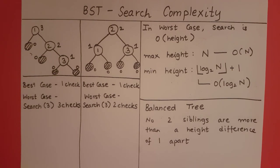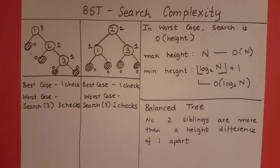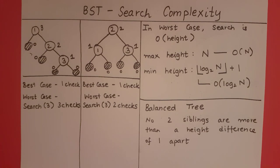Since the second tree is balanced, it gives us a search in O(log n) time. The key takeaway is that when creating a binary search tree, we should always try to create it as a balanced tree. To always ensure the tree remains balanced regardless of input, we can use an AVL tree. We will see how an AVL tree works in the next few videos. This is how you analyze the search complexity in a binary search tree.